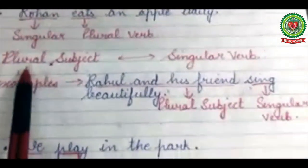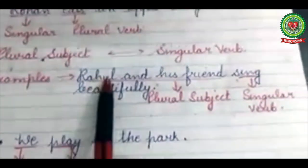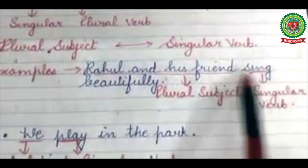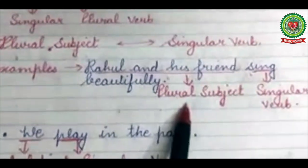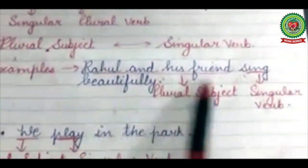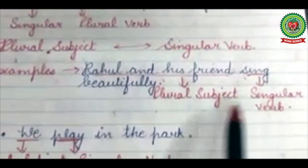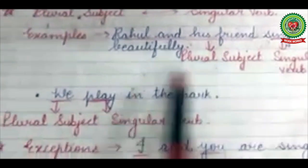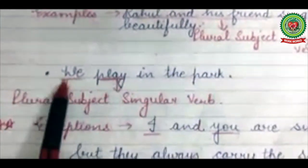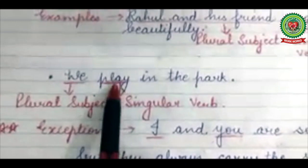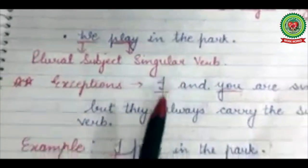In the same way, if our subject is plural, our verb will be singular. For example, Rahul and his friends sing beautifully — Rahul and his friends is a plural subject, and 'sing' has no ES with it, so it is a singular verb. Similarly, we play in the park — 'we' is plural, so the verb will be singular without S or ES.